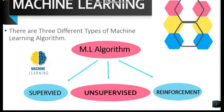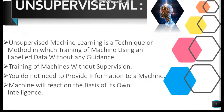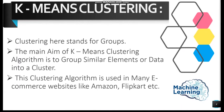Now we discuss unsupervised machine learning. Unsupervised machine learning is a technique in which training of machines is done using unlabeled data without any guidance. As the name indicates, it means training machines without supervision — the machine reacts on the basis of its own intelligence. In unsupervised machine learning, we solve clustering problems. The most important clustering problem is K-Means clustering, where clustering stands for groups.